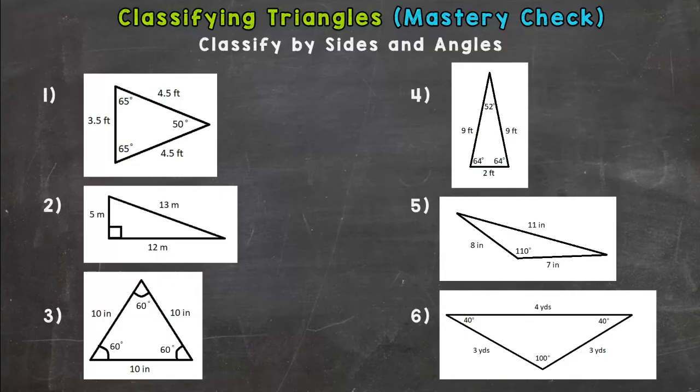So we take a look at the sides and we have two that are congruent which means the same and then one that is different. So two congruent sides, isosceles triangle. Now as far as the angles go, it looks like we have all angles are less than 90 degrees, so that will make it an acute triangle.